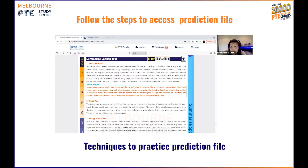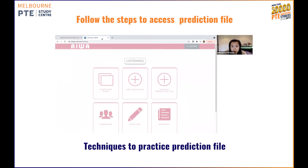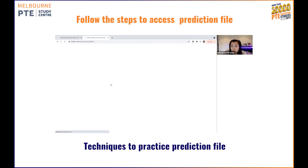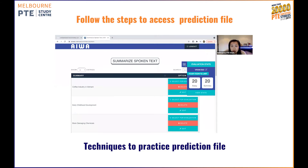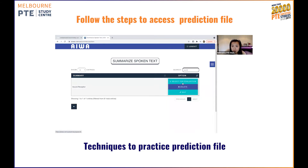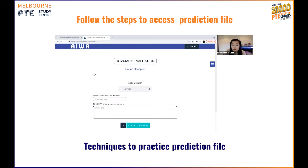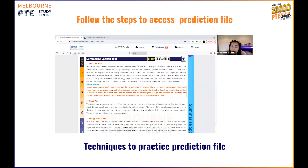If you don't want to do that, you can be able to use your Iowa. You click on Summary — Summarize Spoken Text. What I do is I'm going to show for sound receptor: click for the evaluation, and here's the audio. You listen to the audio, you take notes, and then you write a summary here. After you have done it, you click on evaluate, and then you receive the Iowa report, which is the feedback from your performance for your summary. So that is how you practice by using the prediction file. Either you don't have the Iowa account, so you can use the prediction file as the material — it's up to you.